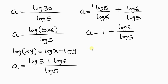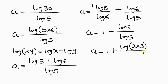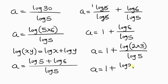Now simplifying further, we're going to have a equal to 1 plus log 6, where log 6 is the same as log(2 times 3). So applying the law of logarithm — log(xy) equals log x plus log y — this becomes a equal to 1 plus log 2 plus log 3, all over log 5.